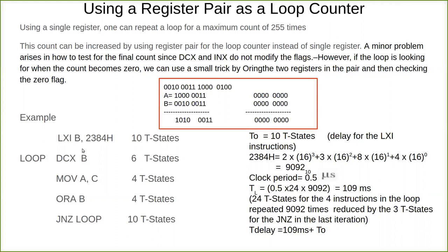Here C is implied. When we say B, it is B and C together. So load register pair BC the value 2384H. This is a 16-bit value.